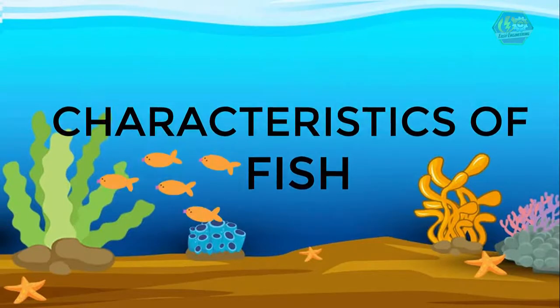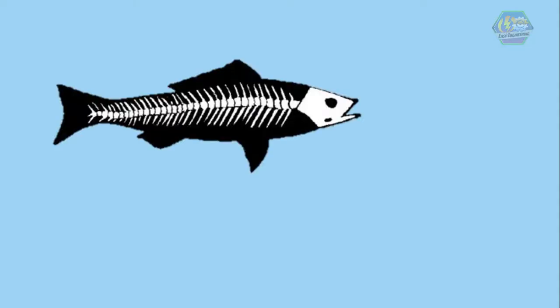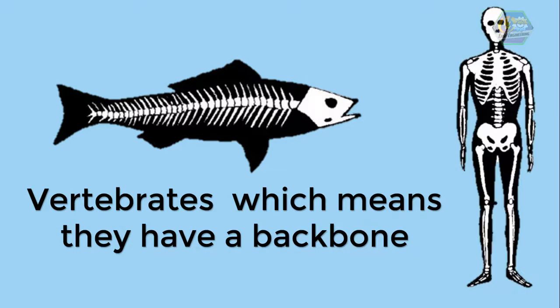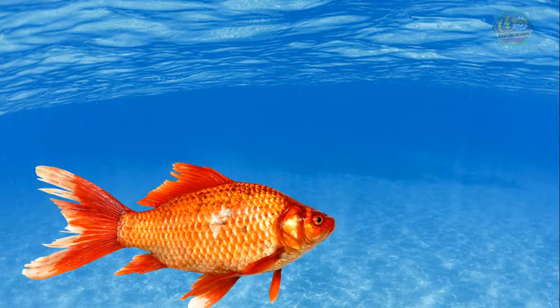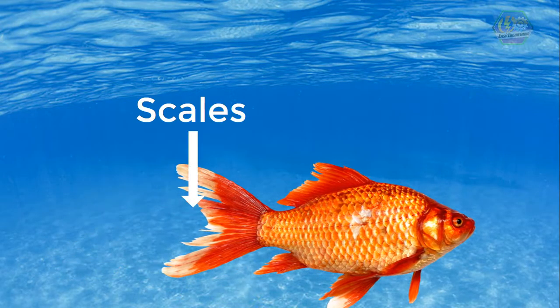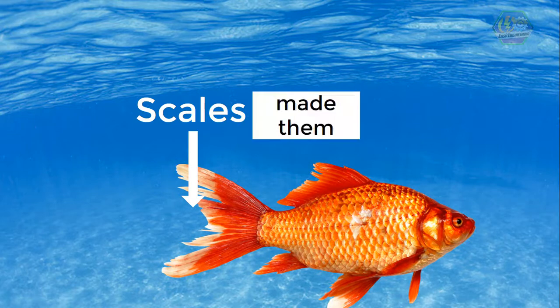Fish are vertebrates, which means they have a backbone, like us humans. Most fish are covered in scales, which help them move more quickly through the water. Some fish have a slime layer over the scales that makes them so slippery and helps with speed.